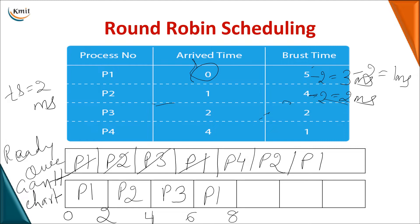Since no new processes arrive after time 4, the next process is P4. It is removed from the ready queue and given the CPU. Its burst time is 1 millisecond, so even though the time slice is 2, we only allot it 1 millisecond — wasting time would be unnecessary. At time 9, P4 finishes and is not added back to the ready queue.